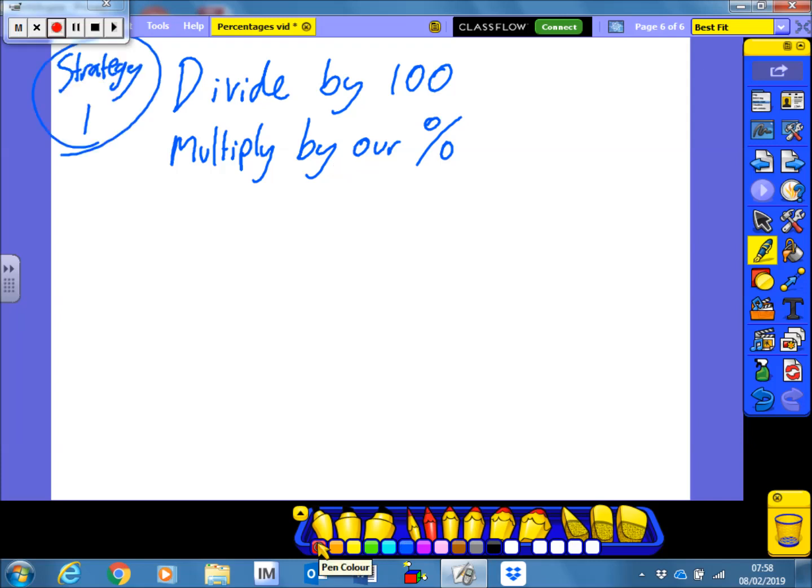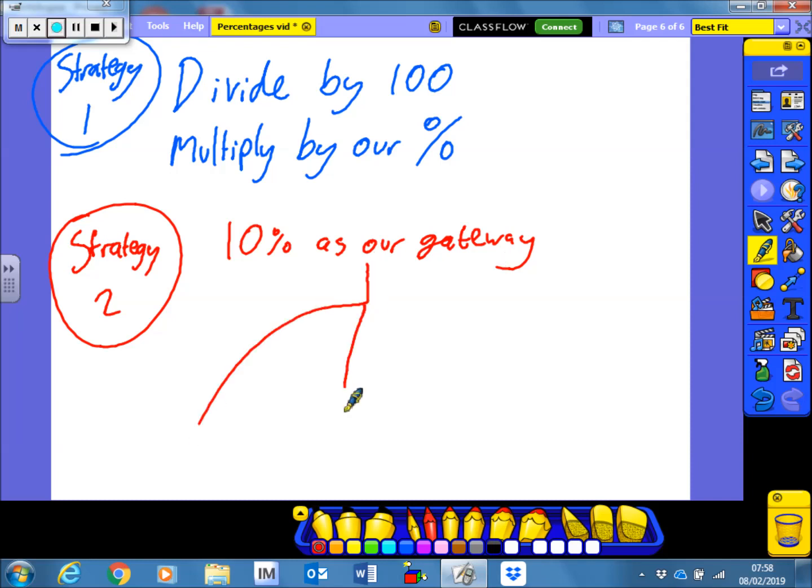But for mental maths, I'm much more of a fan of strategy 2, which was we use 10% as our gateway. So if we use 10% as a gateway, we can then work out all the other percentages by doing something to that 10%. So 30% would just be taking our answer and timesing it by 3, for instance. And we could work out loads of other percentages, in fact, pretty much any other percentage, by doing that. Cheers, guys!